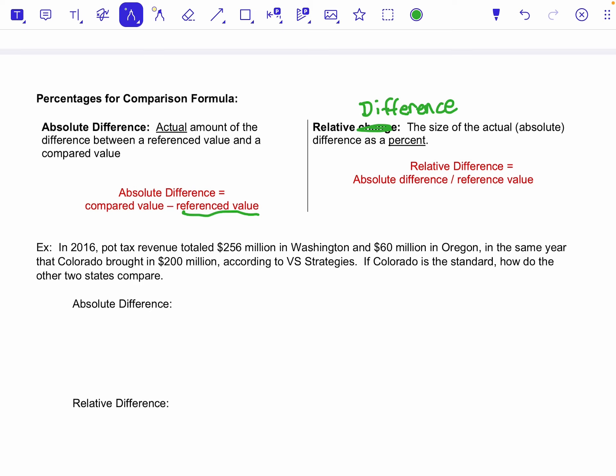And then the value you're comparing it to. So the absolute then is just the straight difference between the two, just like last time. Signs do matter. Relative difference then is the percent difference between the two.